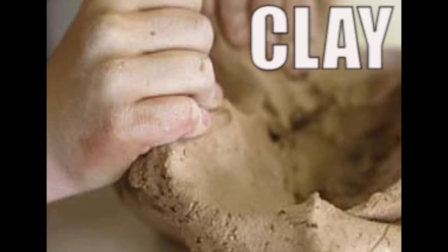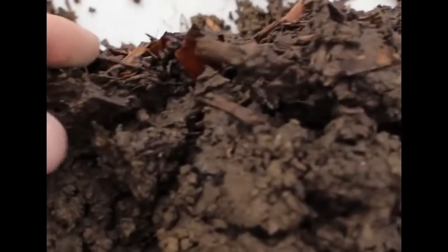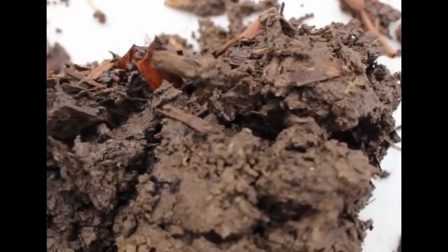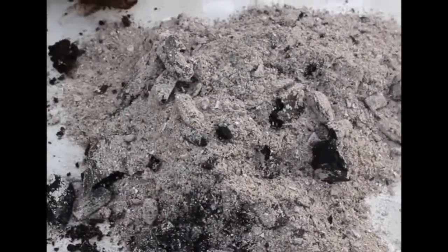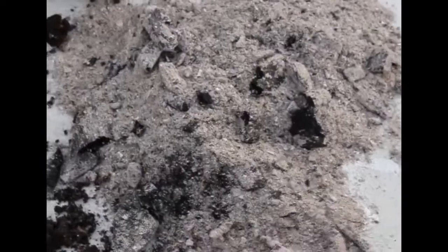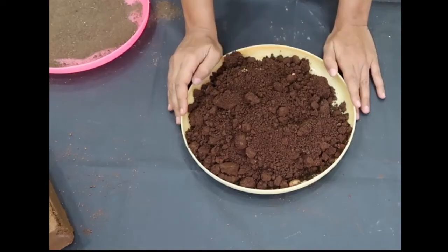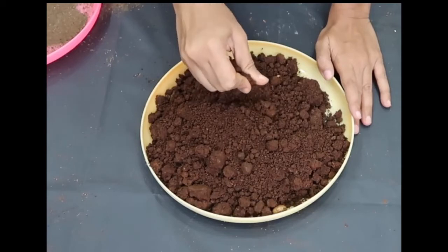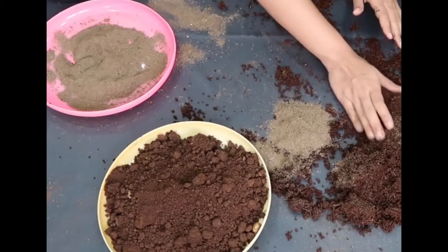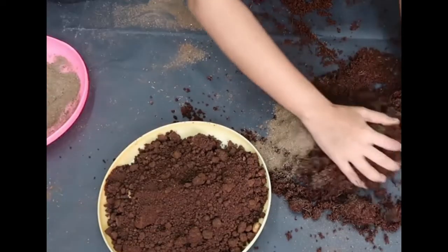Clay particles are fine and the smallest in size. They tend to clump together — clay feels sticky and it's hard to squeeze. Color: different types of soil have different colors; soil may be light or dark.